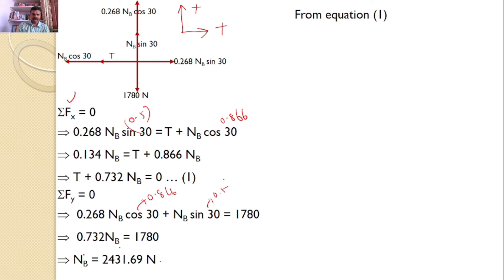Now, we can substitute back here, and from that I can find the value of T. The T value is minus 1780. What is the meaning of this minus? Initially, we assumed that the tension in the prismatic bar is tensile, but since I got negative, the tension force in the prismatic bar is compressive.